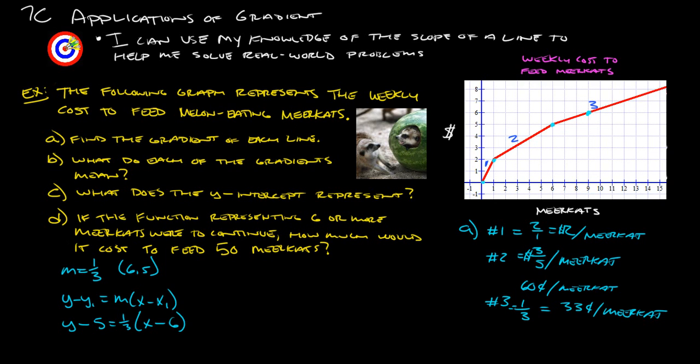So let's see. Let's distribute this one-third through to both of those. And that's going to give us y minus 5 equals one-third x. And then a third of 6 is 2, so that would be minus 2. We'll add 5 to both sides. And we get y equals one-third x plus 3.